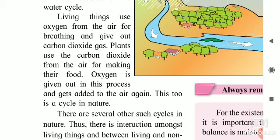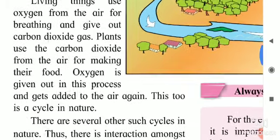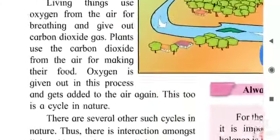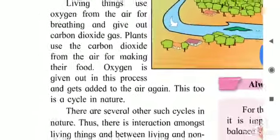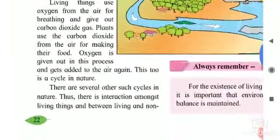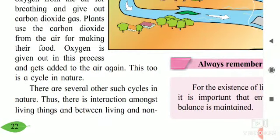Humans take in oxygen from the air and release carbon dioxide — we breathe in oxygen and breathe out carbon dioxide. Plants then use that carbon dioxide and give us back oxygen. This is how the oxygen cycle in nature works. There are several other such cycles in nature.